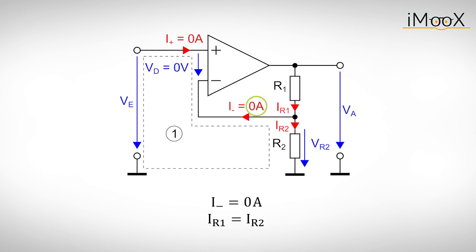With I minus being zero amps, the currents through both resistors are equal. We obtain the voltage drop on R1 via Ohm's law. Finally, by applying loop 2, the output voltage VA is given as the sum of VR1 and VR2. Substituting VR1 and VR2 results in the output voltage to input voltage relation we were looking for.